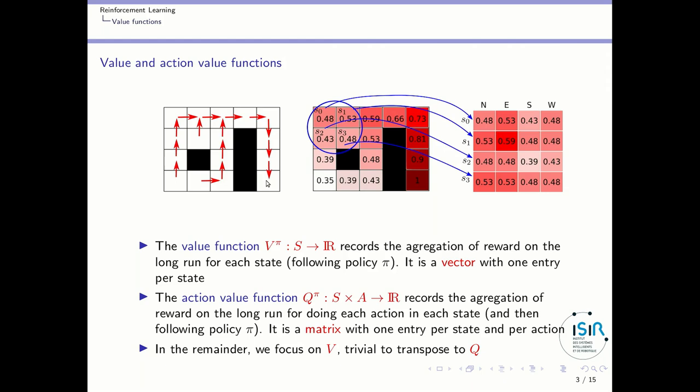First consider the policy on the left here. You have some maze, you assume that there is some reward on that particular cell, and the policy is driving you to that particular cell. When you are in a particular state, for instance here, the value function will tell you what is the value of being in that state and then following the policy defined here. We note it vpi because it's dependent on the policy pi, and it records the aggregation of rewards that the agent will consider on the long run for each state if it follows that particular policy.